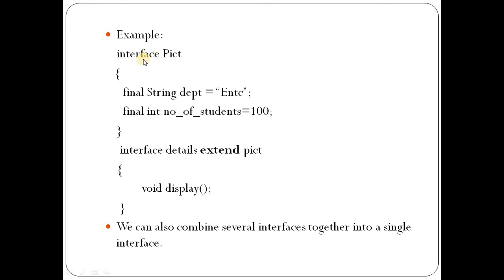For example, interface PICT has two final data fields: department of type String with value ENTC, and number of students with value 100. Interface details, which acts as the sub interface of super interface PICT, has a display method. This display method will print the department and number of students details extended from the PICT interface.